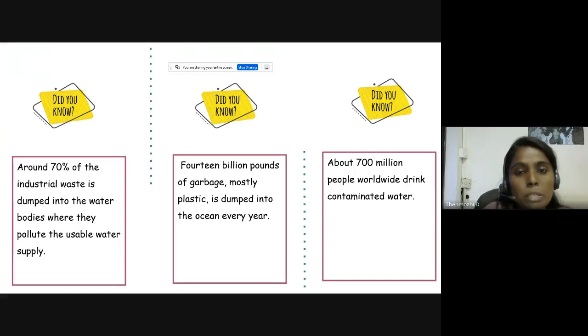Ocean water: 80% of ocean pollution, also called marine pollution, originates on land, whether along the coast or far inland. Contaminants such as chemicals, nutrients, and heavy metals are carried from farms, factories, and cities by streams and rivers into our bays and estuaries. From there, they travel out to sea. Meanwhile, marine debris, particularly plastic, is blown in by wind or washed in via storm drains and sewers.